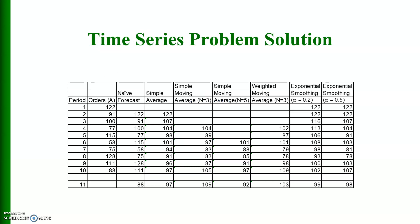These are some time series problem solutions in which you see period, then orders actual, then naive forecast, simple average, simple moving average three periods, simple moving average five periods, then weighted moving average three periods, then exponential smoothing alpha equals 0.2 and exponential smoothing with alpha equals 0.5, and you see the forecast in the last row for the 11th time period.